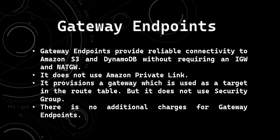Now let's discuss about gateway endpoints. Gateway endpoints provide reliable connectivity to Amazon S3 and DynamoDB without requiring an internet gateway or NAT gateway. So basically, gateway endpoints are generally used for S3 and DynamoDB, not for other AWS services. It does not use Amazon PrivateLink, unlike interface endpoints. It provisions a gateway which is used as a target in the route table, but it does not use a security group, unlike interface endpoints.